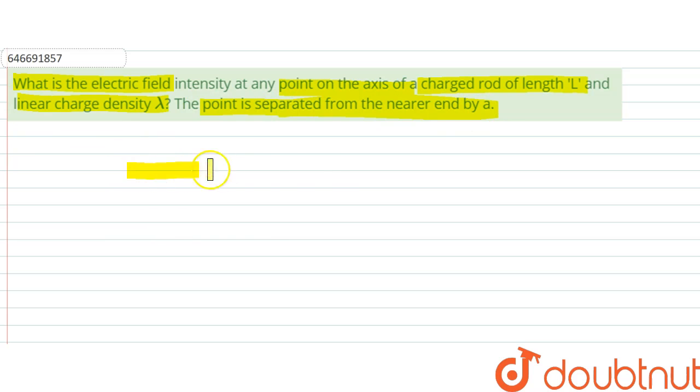So let this be the rod. The distance of this rod is L and the charge density is lambda. From this end, the point P is at distance A.